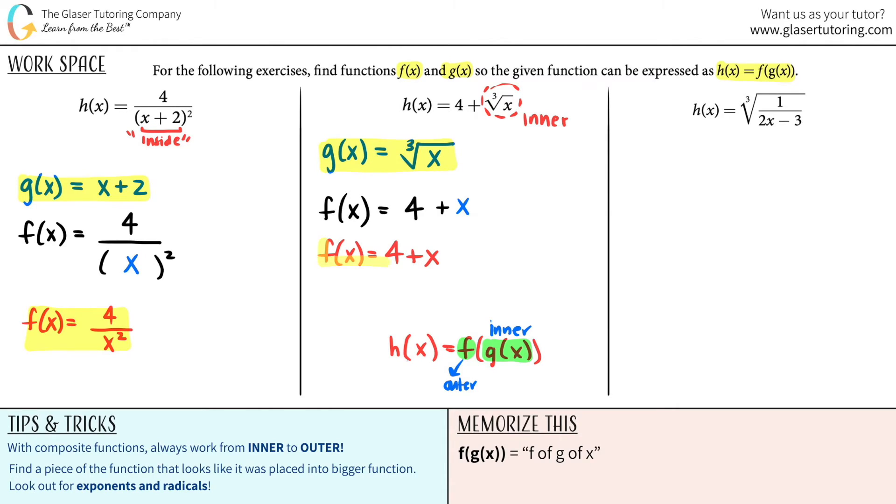So sometimes you'll use your inside notation and what we did when we did this one, but sometimes you could split up the function in two different things. Okay, let's go to the last but not least. Let's see. Okay, this one is just the cube root of 1 over 2x minus 3.